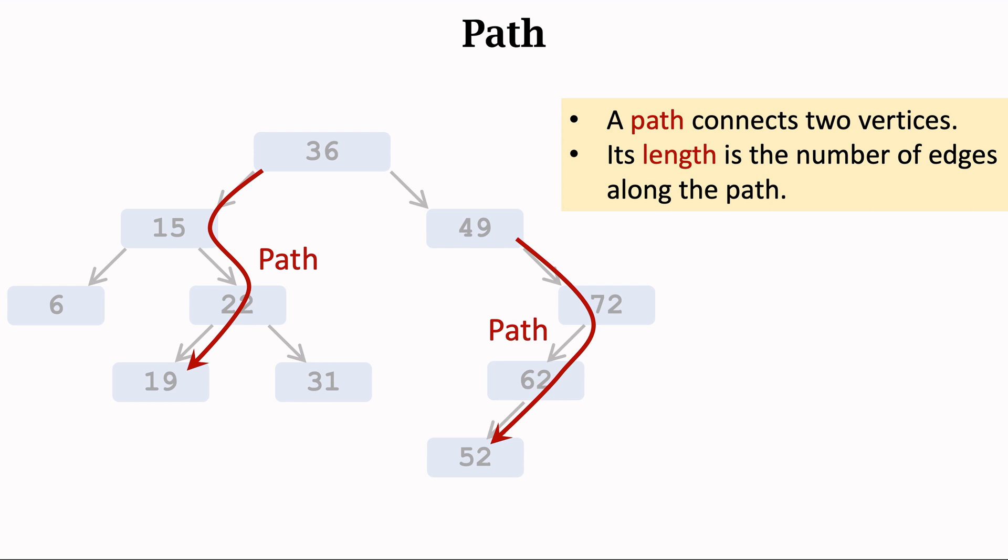Paths have directions. The direction is from ancestor to descendant. The length of a path is the number of edges on the path. I mark two paths in the tree. Their lengths are both three.